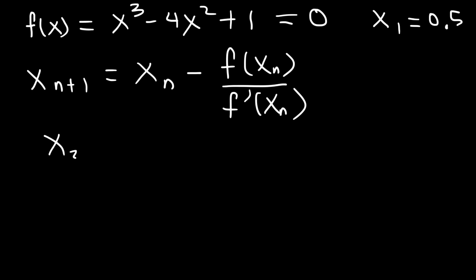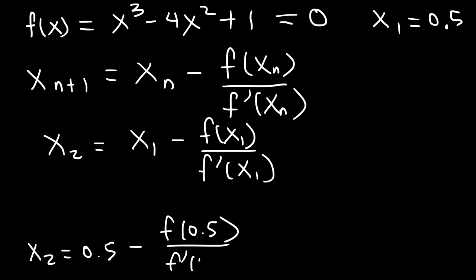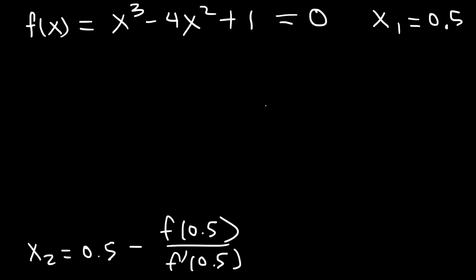So if n is 1, n plus 1 is going to be 2. So x2 is going to equal x1 minus f of 0.5 divided by f prime of 0.5. So let's figure out what f of 0.5 is. So this is going to be 0.5 raised to the third power minus 4 times 0.5 squared plus 1. So let's use a calculator for that.